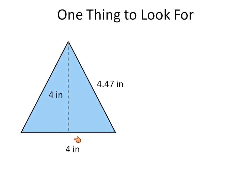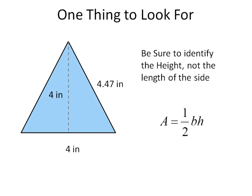So this triangle has a base of four inches. It has the height of four inches. And this side length is four point four seven inches approximately. We have to be sure that we identify the height and not the side length. So we can cross this one off.